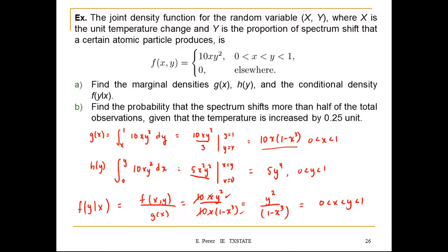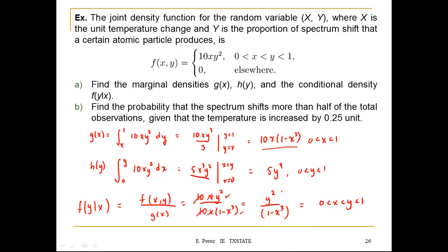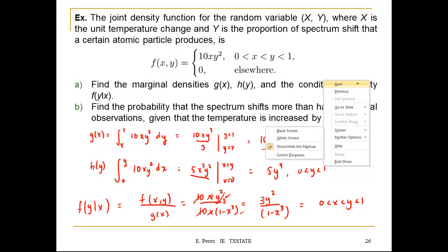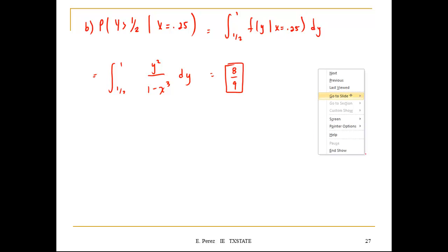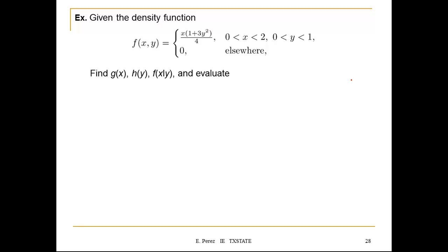The first thing I want to do is clarify a previous problem. One of the comments from the questions in class was about the integration and the result. What is missing is the division by three for the marginal distribution of x. So here this should be three, and finally we should have three y squared divided by one minus x squared, which was the original result. It was my mistake because I forgot to add the denominator for the marginal distribution of x.